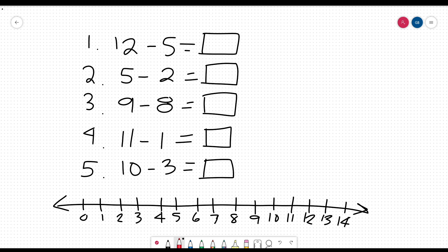Okay, here are the answers. 12 minus 5 is 7. 5 minus 2 is 3. 9 minus 8 is 1. 11 minus 1 is 10, and 10 minus 3 is 7.